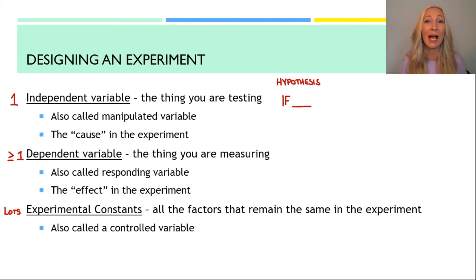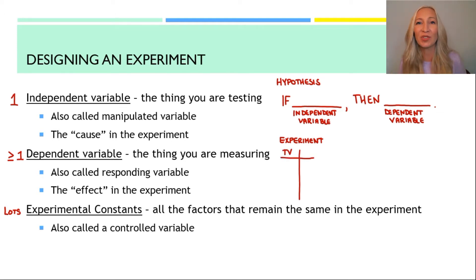If you construct a well-thought-out hypothesis, it will contain both your independent and dependent variables. If I do this, that's the independent variable, then this will happen. That's the dependent variable. When you record data for your experiment, a good data table usually has both the independent and dependent variables. The independent variable is usually on the left, and then the dependent is on the right. When you're analyzing the results of your experiment, if you were to create a graph, usually the independent variable goes on the x-axis, and the dependent variable goes on the y-axis. A well-designed experiment includes both of these variables in the steps of the scientific method.